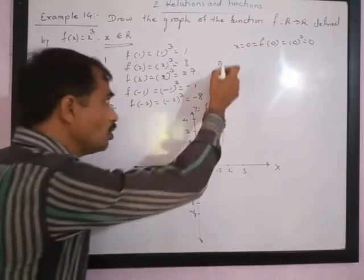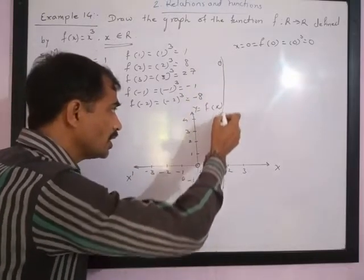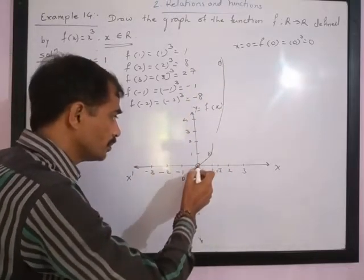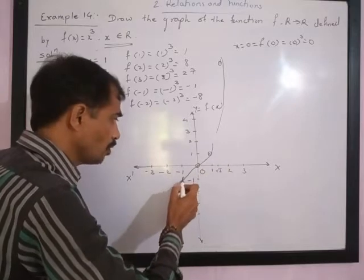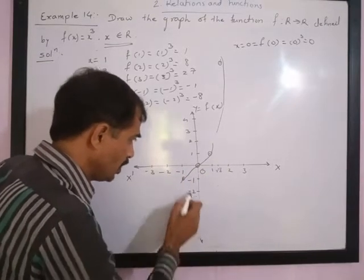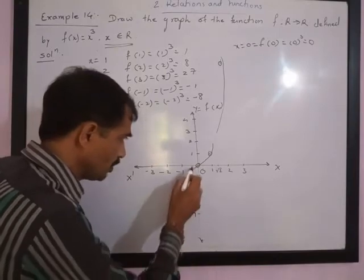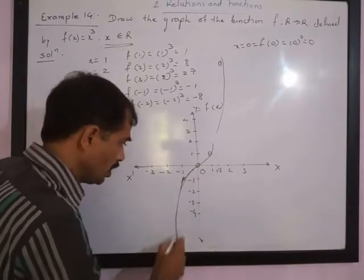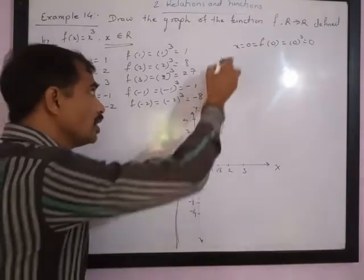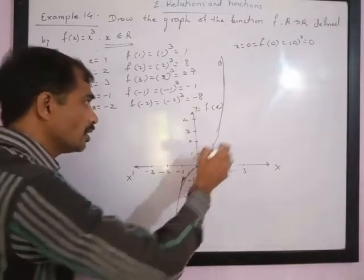If you try to plot the graph, you will get something like this. For x = negative 2, the value is negative 8. So the graph extends into both directions. If you try to plot the graph, it will appear in the first quadrant and the third quadrant.